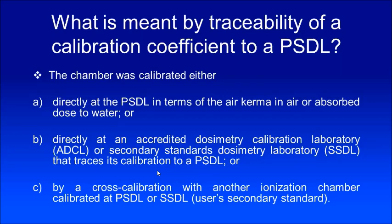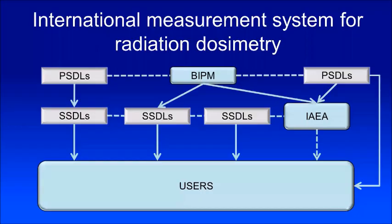Your measurement can be traced to the primary standard dosimeter. Sometimes you may use a dosimeter in your clinic which is not calibrated in a secondary or primary standard, but rather cross-calibrated in your clinic with another ion chamber that is calibrated to a primary or secondary standard. In that case, your traceability goes from your chamber to your calibrated chamber, then to the PSDL and/or SSDL. If you measure with an ion chamber with a calibration factor, that should be traceable to a primary standard.